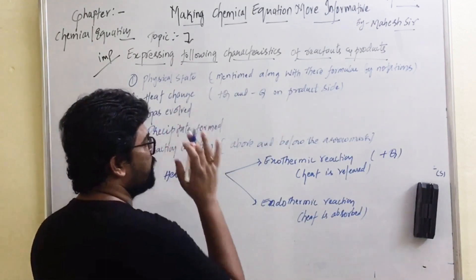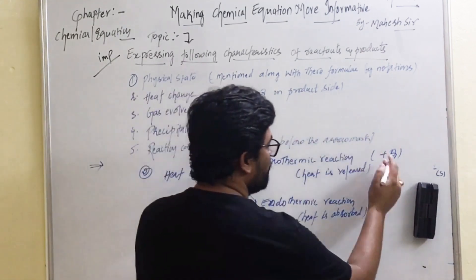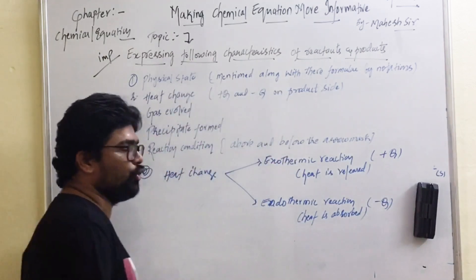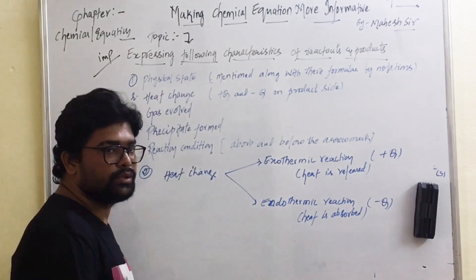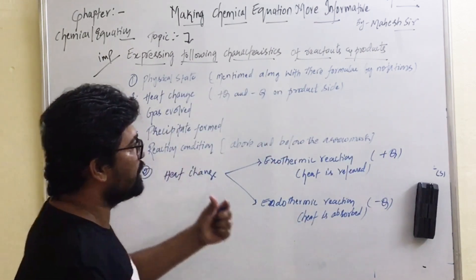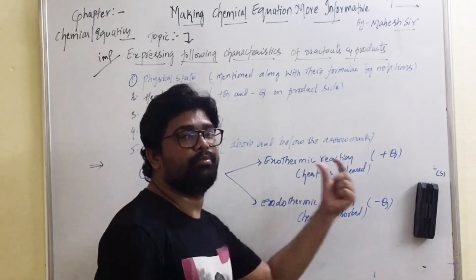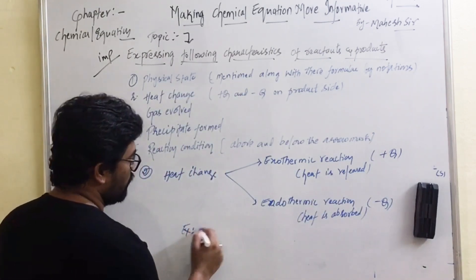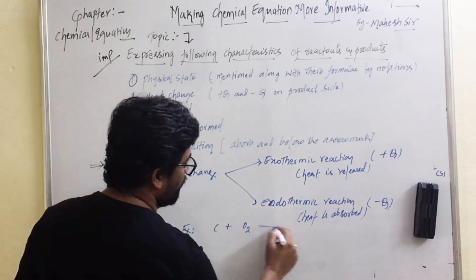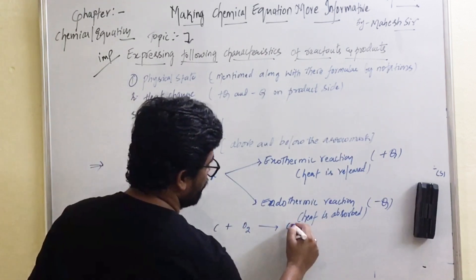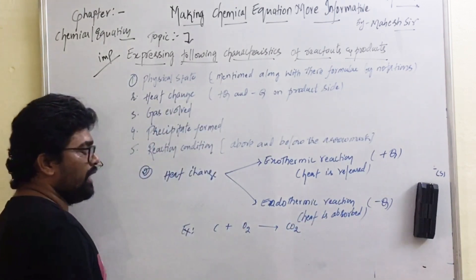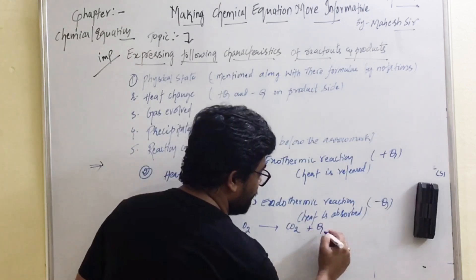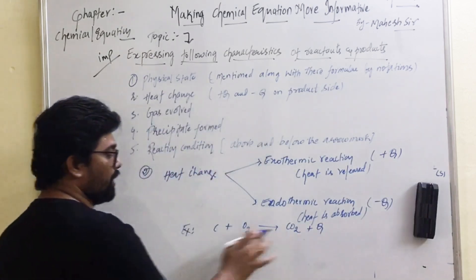Heat change is represented by Q. If it is exothermic, it is plus Q; if it is endothermic, it is minus Q. This plus Q or minus Q should be on the product side. For example, C + O₂ gives rise to CO₂ — it is an exothermic reaction, so it is represented by plus Q on the product side.